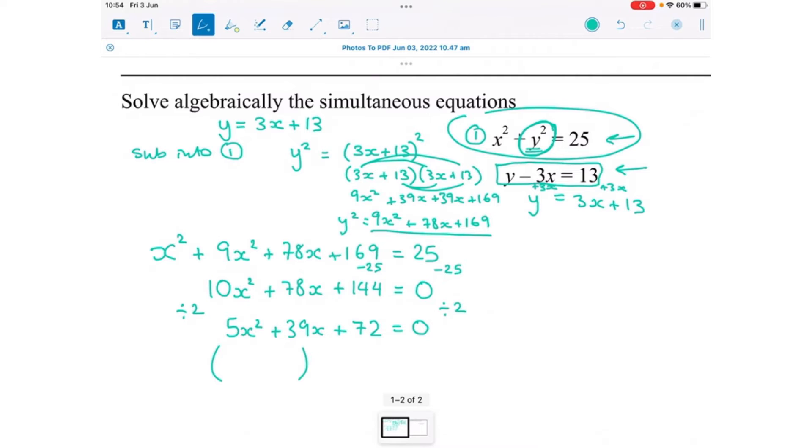And then we'll solve it by factorising. So it's going to be 5x and x and then we need two numbers that multiply together to make 72. So that could be 1 times 72 or 2 times 36 or 3 times 24. And 24 here because then I've got 15x and 24x and that will make 39. So plus and plus.